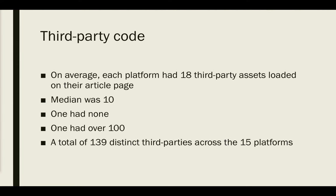Here's what I found. On average, each of the 15 platforms had 18 third-party assets being loaded on their article page — the median was 10. There was one that had none: kudos to InformPubs Online on having no trackers on your platform. One had over 100. I found a total of 139 distinct third-party asset sources across these 15 platforms.